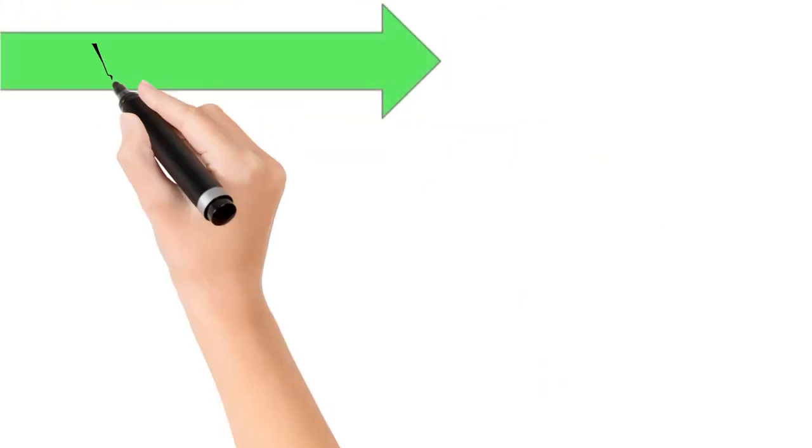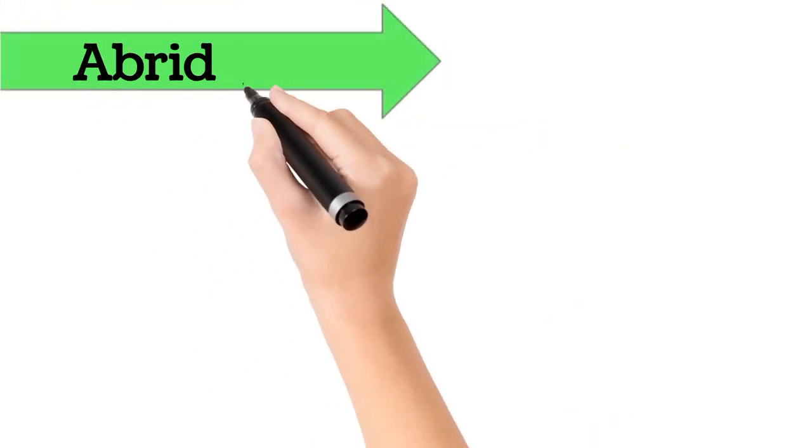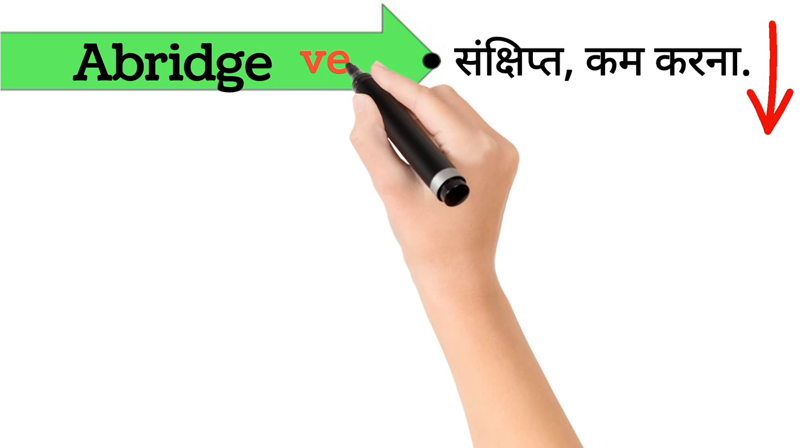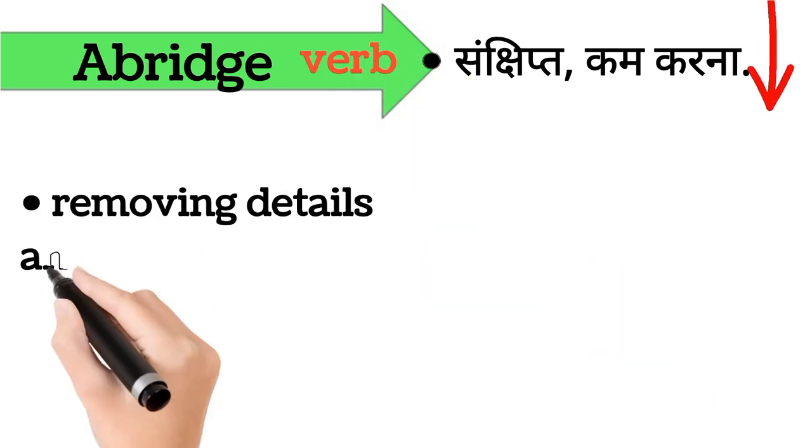Abridge. Abridge ka arth hai, sankshipt kam karna. Abridge word verb form mein aata hai. It's also called, removing details and information that is not important.